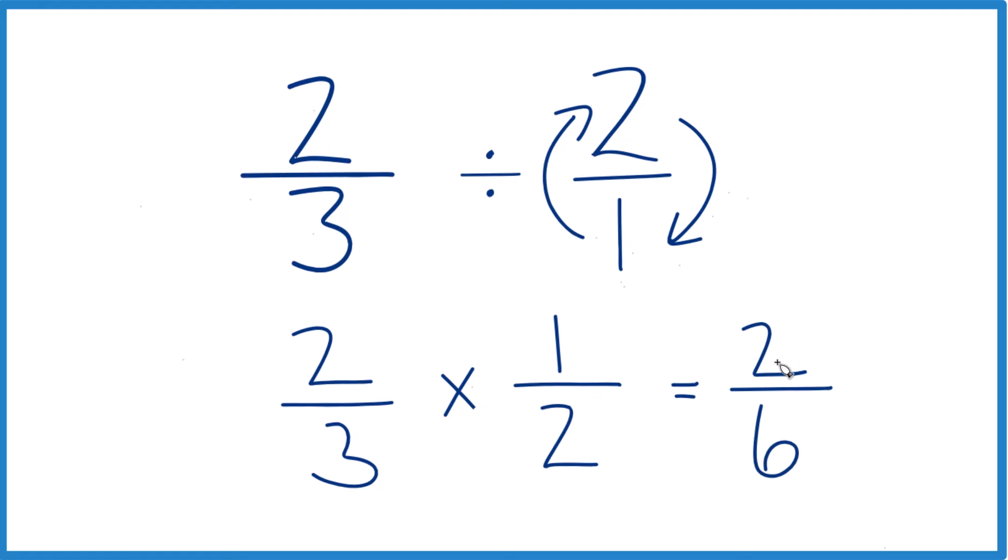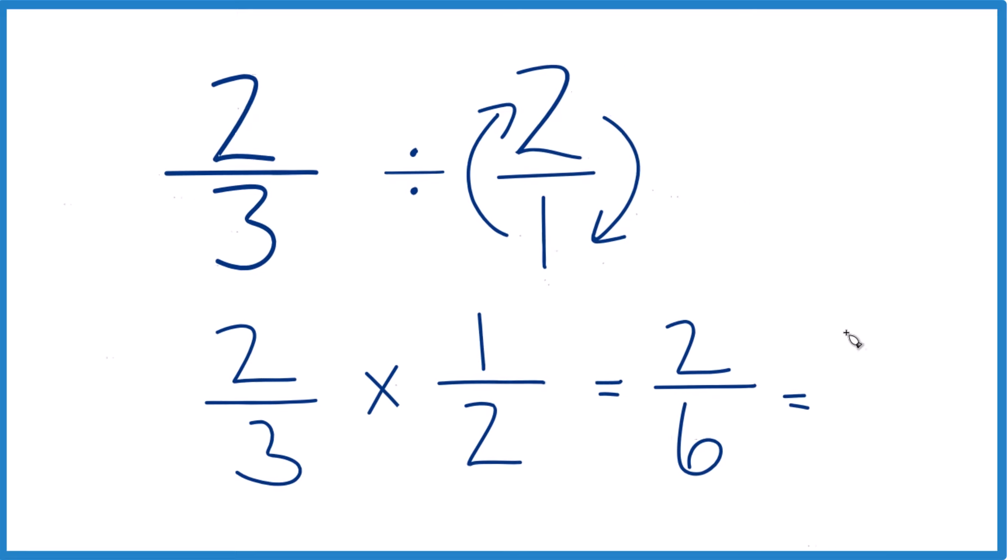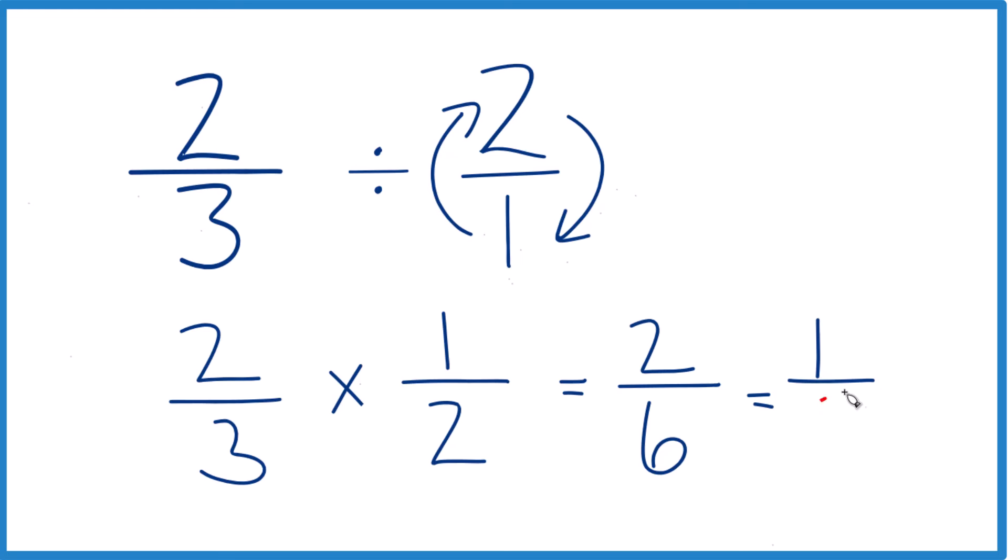And we can actually simplify this a little bit further, because these are both even numbers. So two divided by two, that's one, six divided by two, that's three.